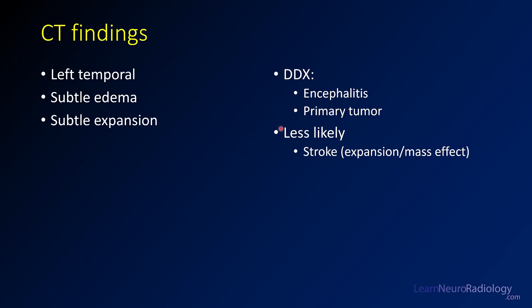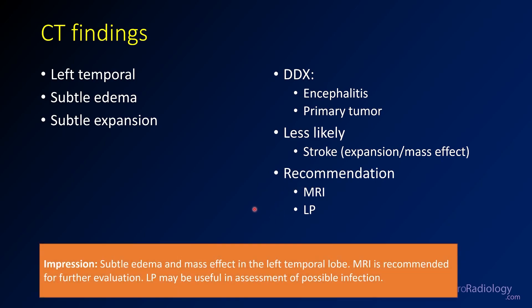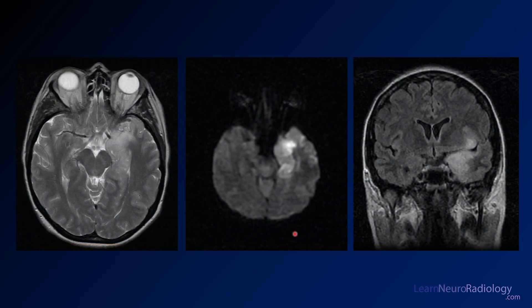The thing that you particularly have to worry about is HIV encephalitis. Stroke is definitely possible, but the distribution here isn't really perfect for stroke, and the patient doesn't have the clinical syndrome for stroke, making that less likely. You want this patient to get an MRI and a lumbar puncture. The impression is subtle edema and mass effect of the left temporal lobe — recommend MRI for further evaluation, and maybe LP if clinically concerned about infection.